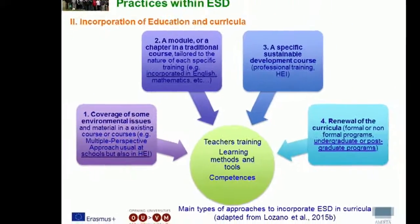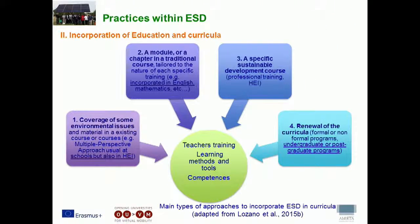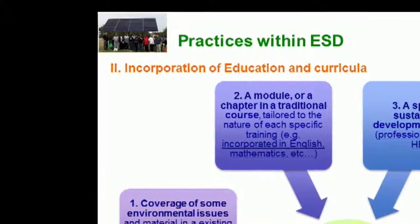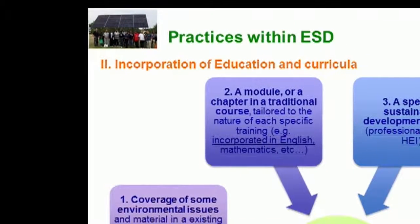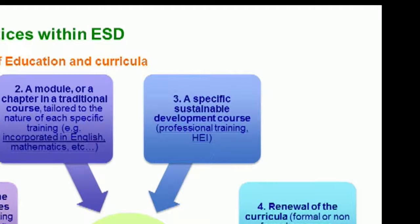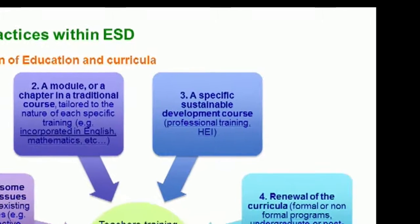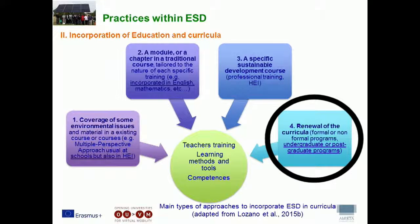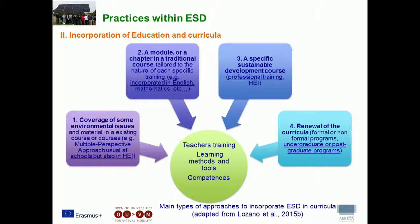Another level is to add a module or chapter to a traditional course — for example, English or mathematics — and try to add sustainability issues to that course. A further level is to develop a specific sustainable development course, usually done at professional training or higher education institutions. A fourth level is a renewal of a curriculum — by developing a program such as engineering for sustainable development or an environmental engineering program, applied at undergraduate or postgraduate level at higher education institutions.